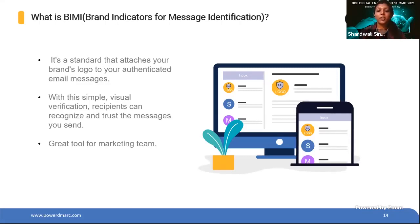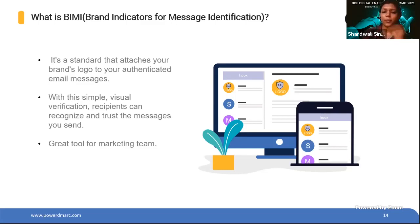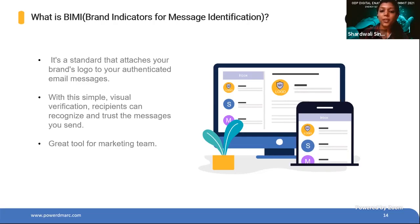Our final feature is BIMI — Brand Indicators for Message Identification. It is a standard that uses brand presence to make emails more recognizable by attaching the logo of your brand on every email sent out from your domain. It acts as a second tool for your marketing campaign — every time you send an email to your customer, your customer will see your logo in their inbox, reinforcing your brand image.